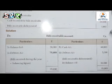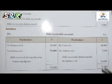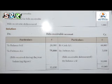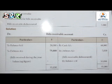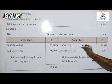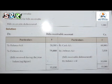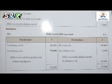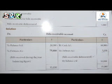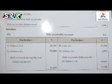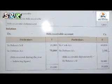Bills Receivable Account always starts on the Debit side. Opening balance comes under Debit side: To Balance Brought Down — 20,000. Closing Bills Receivable comes under Credit side: By Balance Carried Down — 30,000. Cash received for Bills Receivable comes under Credit side: By Cash Account — 60,000. Bills Receivable Dishonored comes under Credit side: By Debtors Account — 5,000. We just post each item on the correct side.